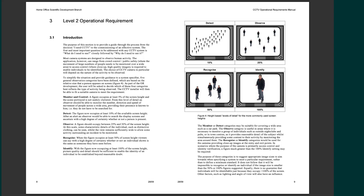CCTV cameras are designed to monitor human activity but the application can vary — from observation to identifying an individual to allowing a car access through a gate. There are hundreds if not thousands of different applications and this document gives four examples. I've left a link in the description for you to download this, and we're referring to pages eight and nine.